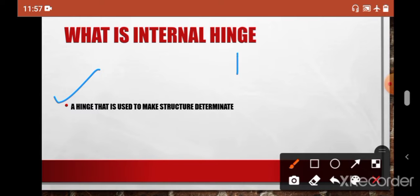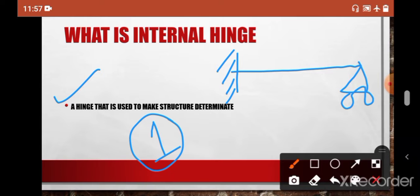Simply, let's say you have a propped cantilever like this one. This is indeterminate by degree of one. So now if you put an internal hinge here like this one, it becomes determinate.